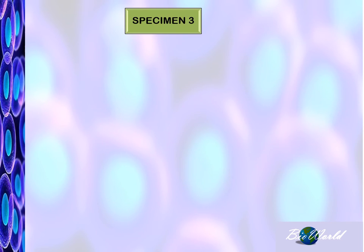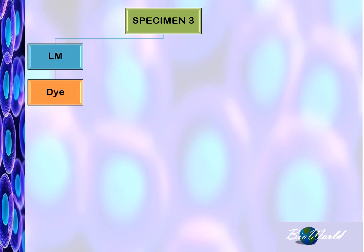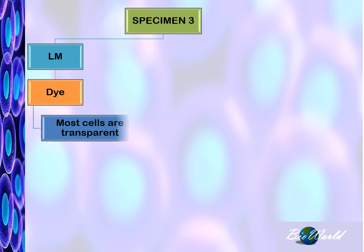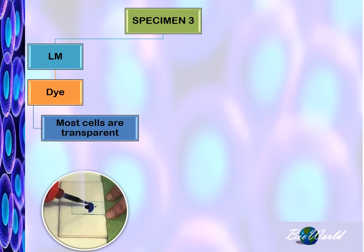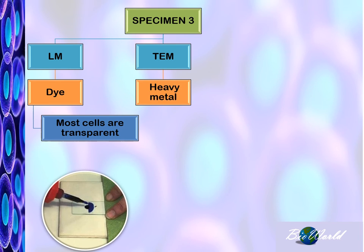The third difference between specimen preparation in these microscopes is that in the light microscope, we can use dye to make the images more visible. This is done because cells are transparent. However, in the transmission electron microscope,